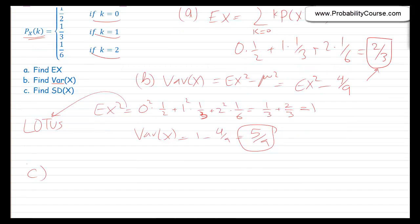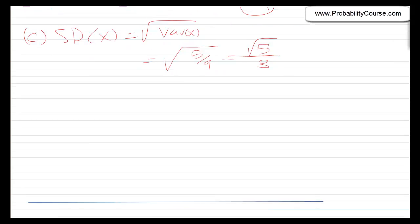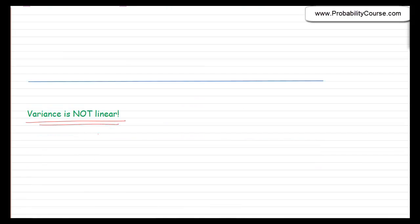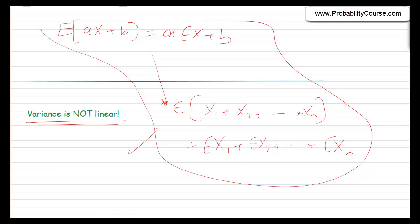The last topic is that variance is not linear. Recall that expectation is linear: E[ax + b] = a·E[x] + b, and E[x₁ + x₂ + ... + xₙ] = E[x₁] + E[x₂] + ... + E[xₙ]. So expectation is a linear operator. However, variance is not.